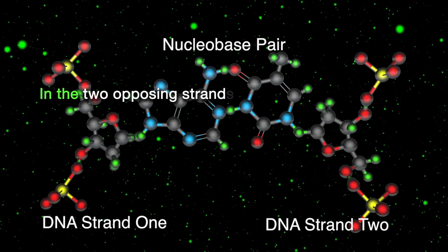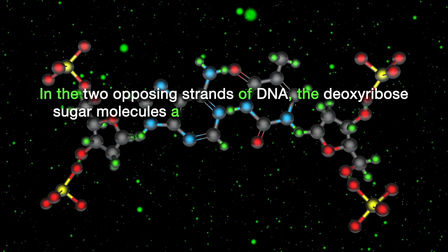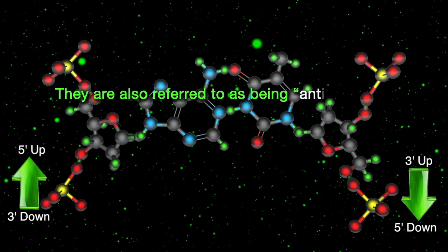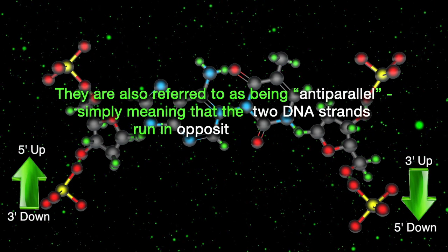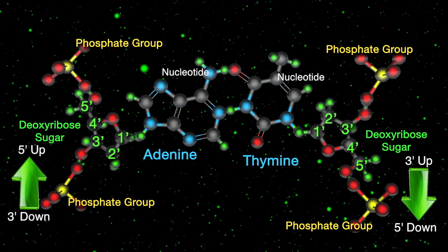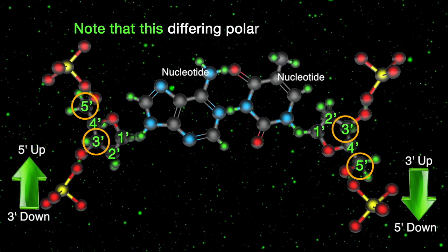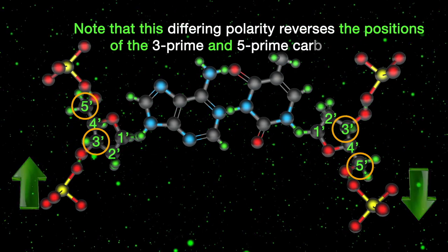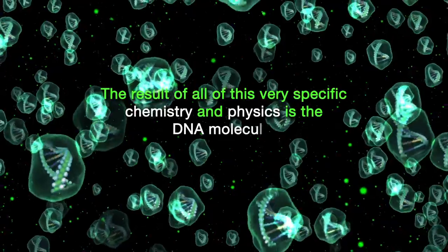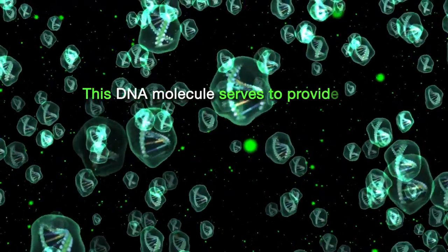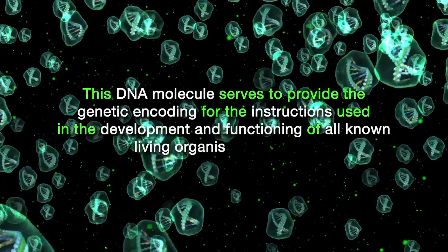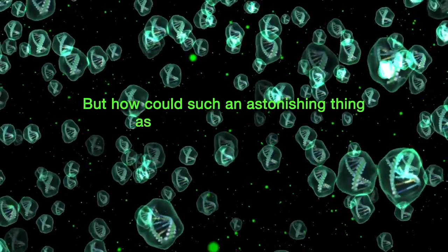The three prime carbon atom and the five prime carbon atom, along with their oxygen and hydrogen atoms, referred to as a hydroxyl group, are the bonding point for the phosphate groups. The one prime carbon atom is the bonding point for the nucleobase. A deoxyribose molecule bonded to a nucleobase is referred to as a nucleoside. A nucleoside with a phosphate group attached is referred to as a nucleotide. A single strand of DNA, also referred to as a polynucleotide chain, is built up of connecting nucleotides which can number into the hundreds of millions.